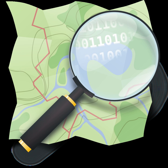Map data is collected from scratch by volunteers performing systematic ground surveys using tools such as a handheld GPS unit, a notebook, digital camera, or a voice recorder. The data is then entered into the OpenStreetMap database. Mapathon competition events are also held by OpenStreetMap team and by non-profit organizations and local governments to map a particular area. The availability of aerial photography and other data from commercial and government sources has added important sources of data for manual editing and automated imports.